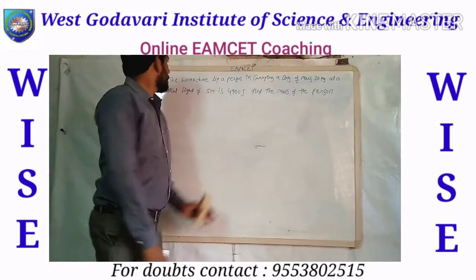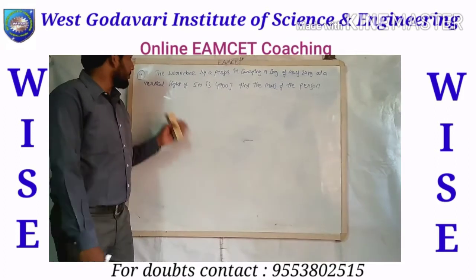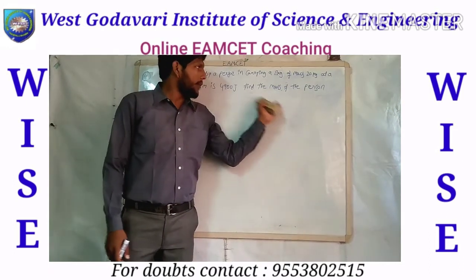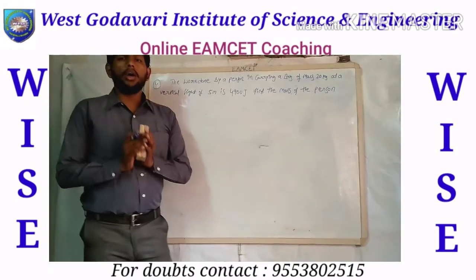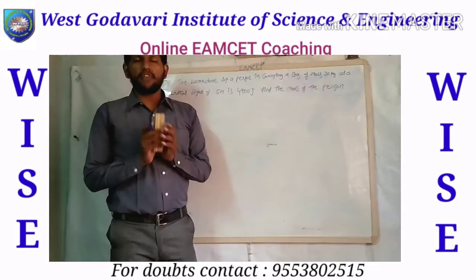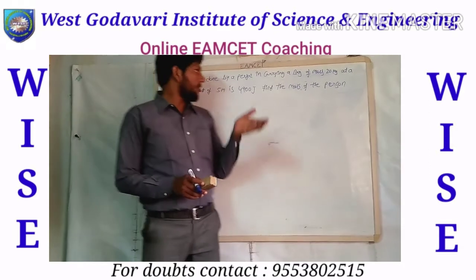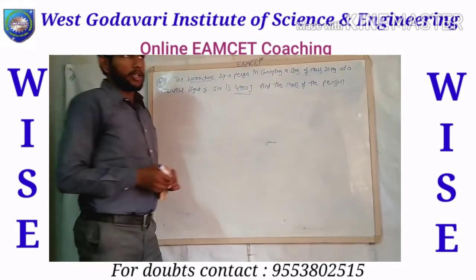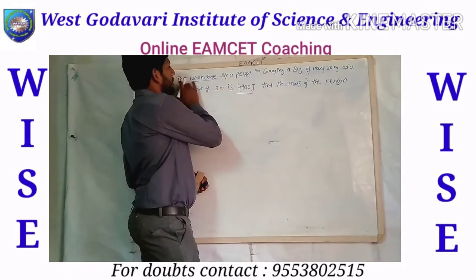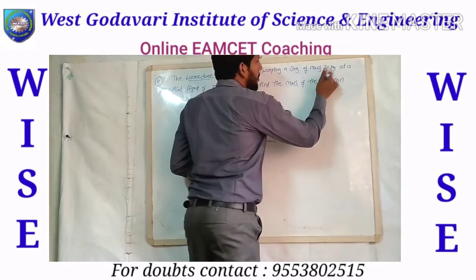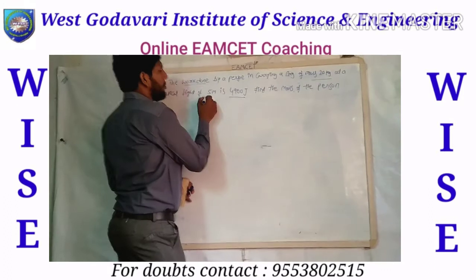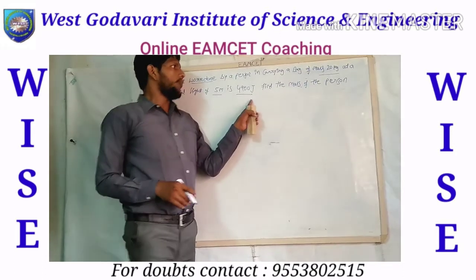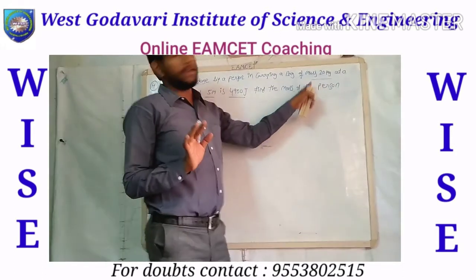The next problem: the work done by a person in carrying a bag of mass 20 kg at a vertical height of 5 meters is 4900 joules. Find the mass of the person. Unlike previous problems where we solved for work done, here work done is already given as 4900 joules. The mass of 20 kg is the bag mass only, not the person's mass. The vertical height is 5 meters.